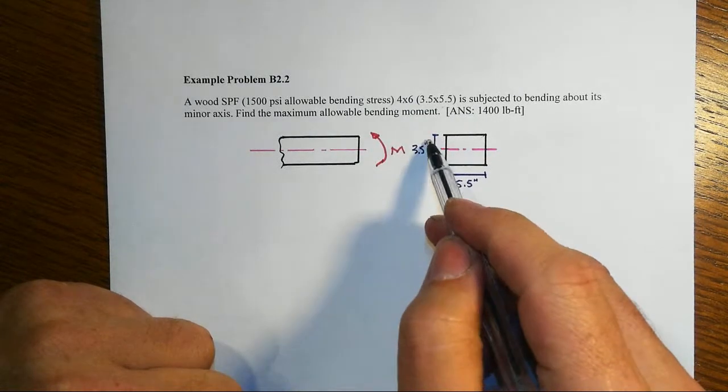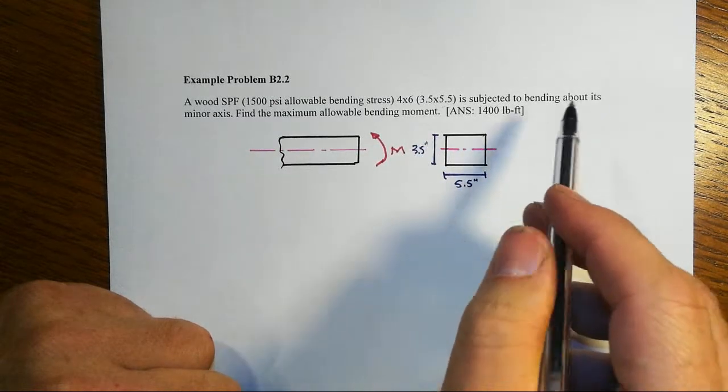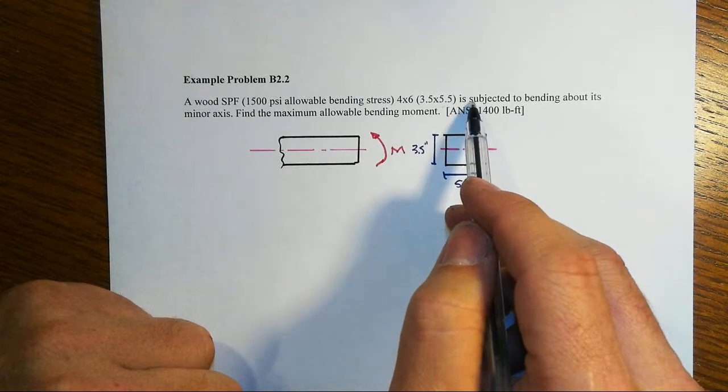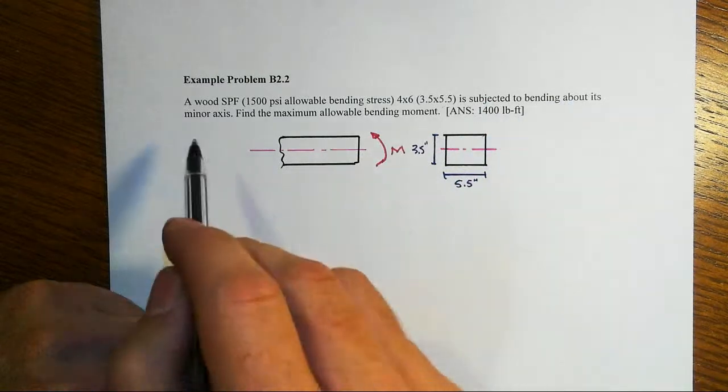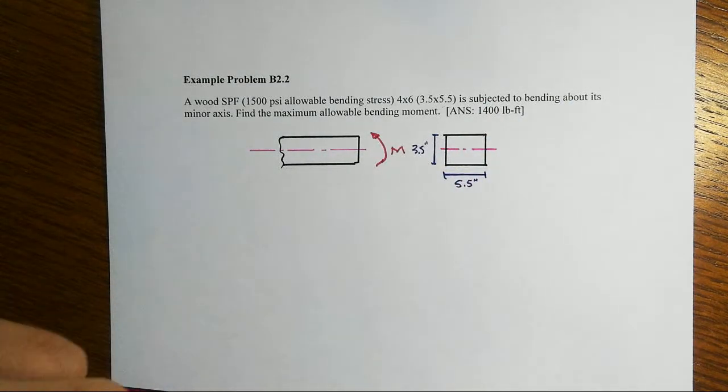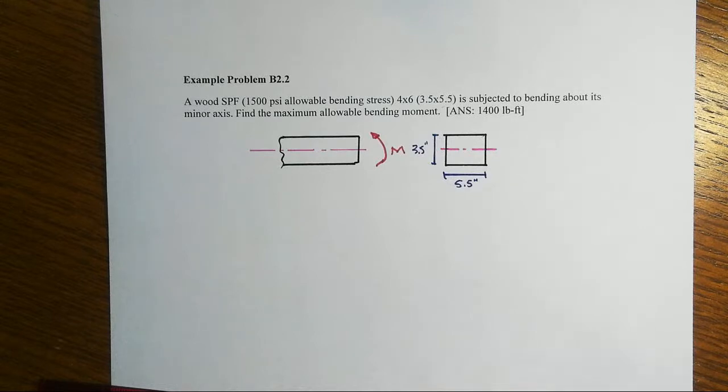Why did I know to put the 3.5 vertical and 5.5 horizontal? Because it told me that this member is subjected to bending about its minor axis. The minor axis is the one with the lower I.